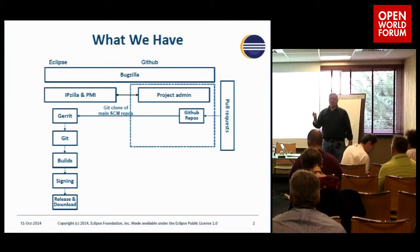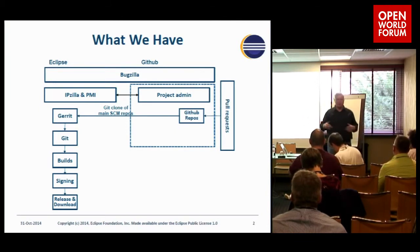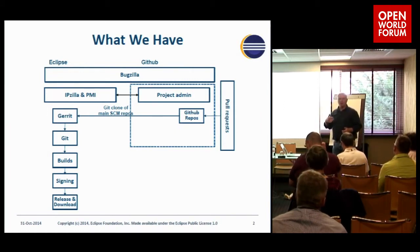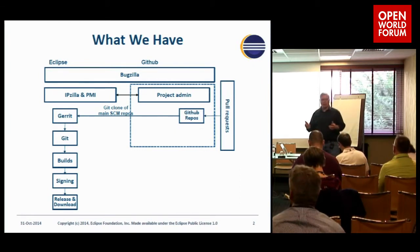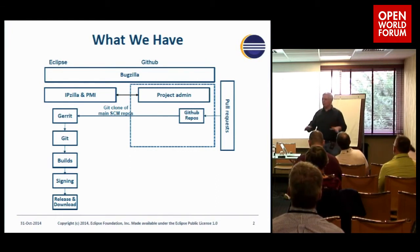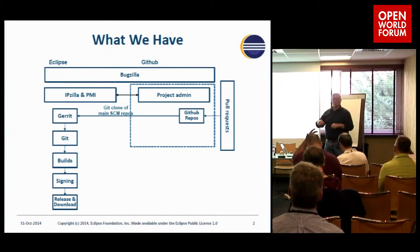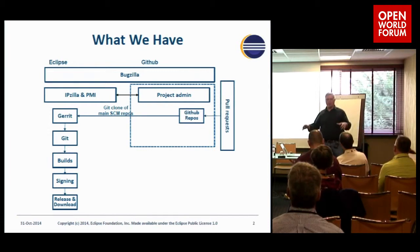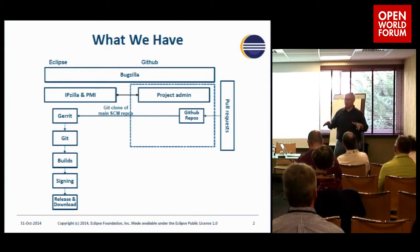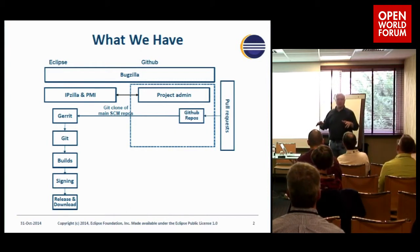IPzilla is basically an instance of Bugzilla that we forked to add some extra workflow stuff, and that's what we use for managing all of our intellectual property. We're really careful at Eclipse — we do a complete analysis of all the third-party dependencies that our open source projects rely on, going deep into every single one all the way down. The world's record so far was a developer who wanted to use one library, and by the time we exploded the whole thing, it was 64 libraries nested six deep. It's turtles all the way down — we go all the way.